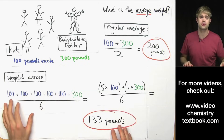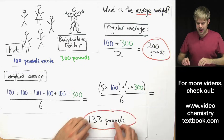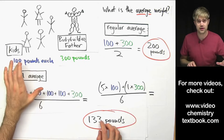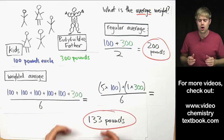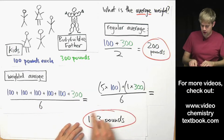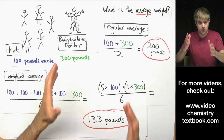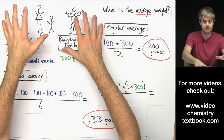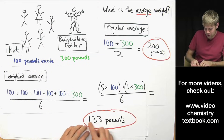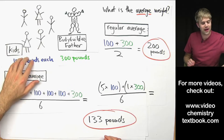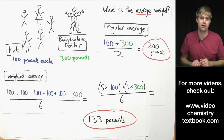The weighted average is 133 pounds. Notice this number is much less than 200, and 133 is a lot closer to the weight of the kids. That's because of how the weighted average works: it pulls the average closest to whatever we have the most of. If it were half and half, it would be 200 pounds. But since we have more kids, we pull the number down closer to their weight — that's why the weighted average is 133, very close to 100 pounds.